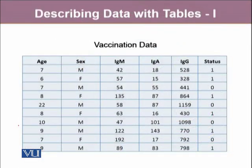Let's look at this exemplary data where we have obtained the age, sex, IgM, IgA, and IgG, and lastly the status of different respondents. We have organized this data as a grid of rows and columns, where these columns are defined as the variables, and the rows are defined as the cases.